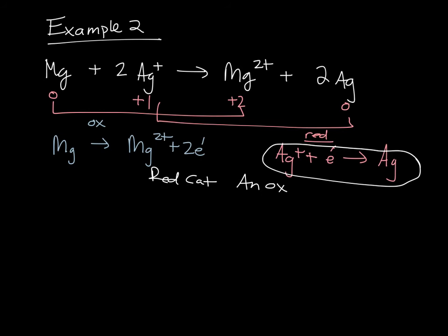So I turn to my best friend, the standard reduction potentials list, and I see that my silver one plus my electron yielding the silver metal has a standard reduction potential of 0.80 volts.